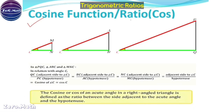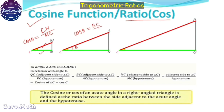Coming to the cosine function — for the first triangle, cos theta is the adjacent side CN divided by hypotenuse MC. In the second triangle, the adjacent side is the green line BC, so cos theta is BC divided by AC. For the third triangle, cos theta is CQ divided by BC, which is the longest side. So cosine of an acute angle in a right-angle triangle is the ratio of the side adjacent to the acute angle to the hypotenuse.